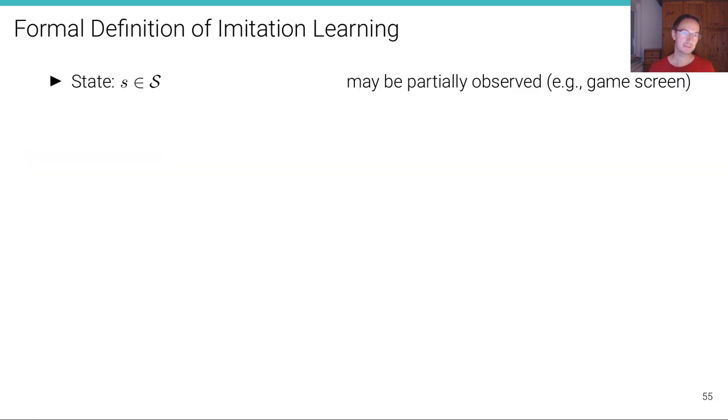Let's define the problem formally. The state is typically called s. So we have a set of states, and little s is an element of the set of states. This is one particular state. The state may be fully observed or partially observed. Typically it's partially observed. For example, in a video game, you only observe what's on the screen.